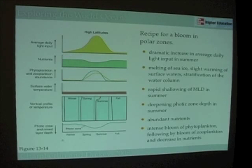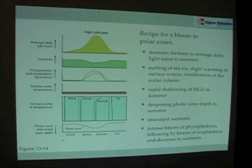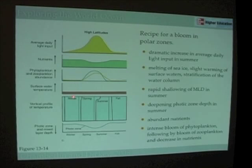We can look at polar zones — the regions above 66.5 degrees north or below 66.5 degrees south. In the polar regions, we generally see in the wintertime a very homogeneous water column mixed very deeply.